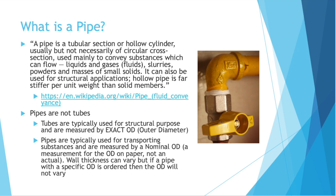Pipes are not tubes, and this is an important distinction. Tubes are almost always used for structural purposes and are measured by exact OD, outer diameter. Pipes are typically used for transporting substances and are measured by a nominal OD — a measurement of the OD on paper, in name, but not actual. Wall thickness can vary for pipes, but if a pipe with a specific OD is ordered, the OD will not vary even if the wall thickness does.